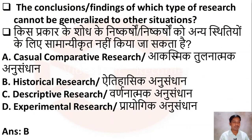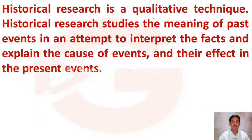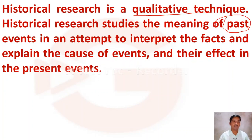The next question: the conclusions or findings of which type of research cannot be generalized to other situations? Option A: causal comparative research, Option B: historical research, Option C: descriptive research, Option D: experimental research. The right answer is historical research. Historical research is a qualitative technique that studies the meaning of past events.